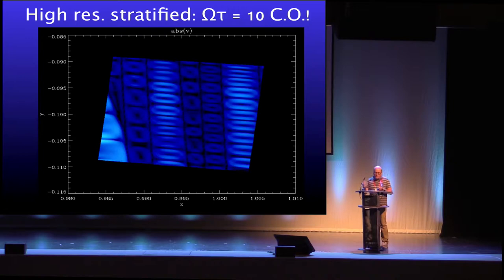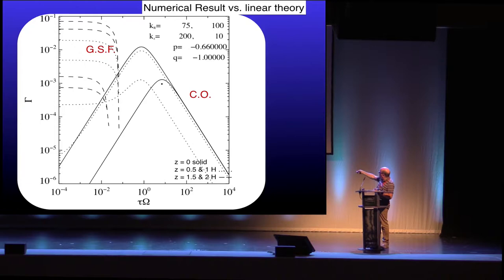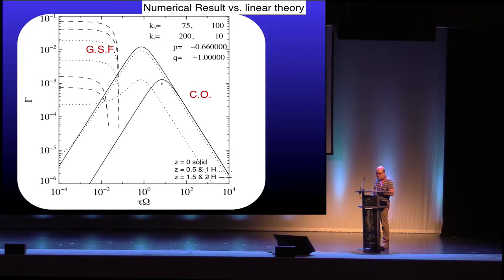You can define different regimes by plotting growth rates as a function of local thermal relaxation time: 10⁴ means 10,000 orbits for the gas to adapt to background temperature; 10⁻⁴ means nearly instantaneous. The convective overstability has maximum growth rates when the cooling time and dynamical timescale are roughly equal. At very short cooling times, the Goldreich-Schubert-Fricke instability dominates the disk. So we have two different instabilities operating in two different regimes.